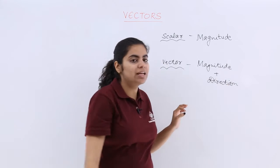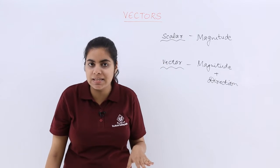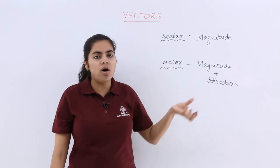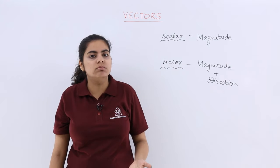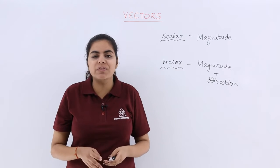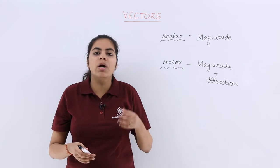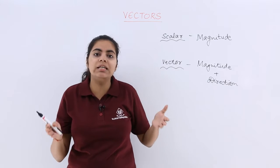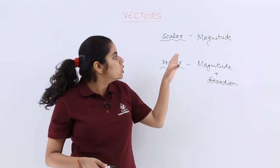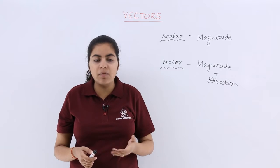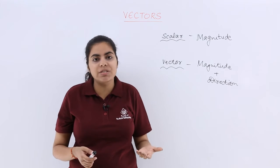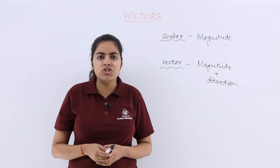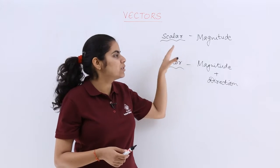When I say scalar quantities, only numbers come to mind. Examples include volume and area. If I say I have a cube of side 5 cm, its volume is 125 cm³ — I don't say towards the north or east. So there is no direction involved. Temperature is another example: 98.6 degrees Fahrenheit or 37 degrees Celsius, with no direction involved. Those are examples of scalar quantities.